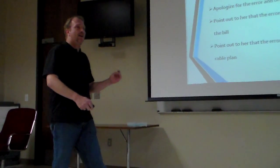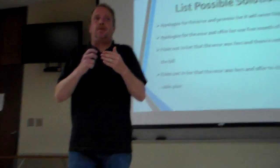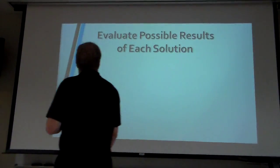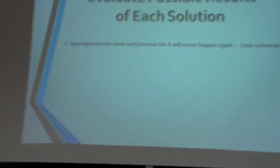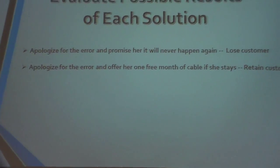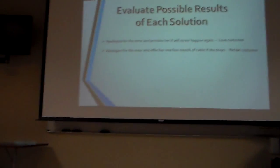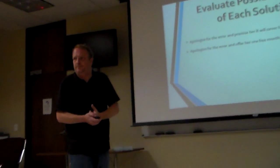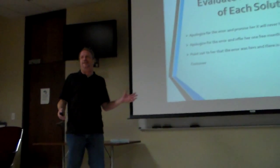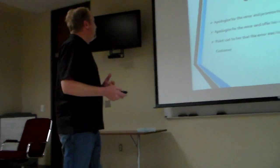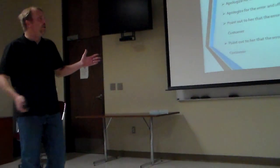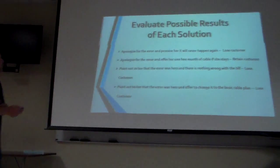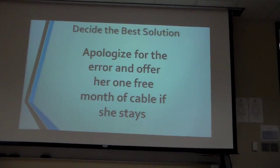Now we've got four possible solutions. Let's look at the possible consequences of each. If I apologize and promise it will never happen again — it's probably going to happen again, and we're going to lose her trust. If I apologize and offer one free month of cable, I might have a chance of keeping her — at least for one month. If I point out the error was hers and nothing was wrong with the bill, I'm definitely going to lose the customer. And if I point out the error was hers and offer to switch her to basic, I'm probably going to lose the customer too. So the best answer is the second option: apologize for the error and offer her one free month of cable if she stays.